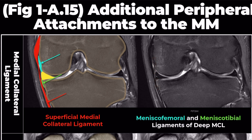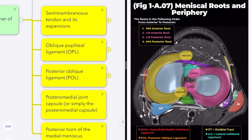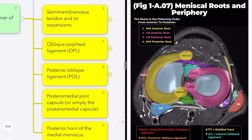The posterior third encompasses the posteromedial corner of the knee, lying between the posterior margin of the superficial medial collateral ligament and the medial border of the posterior cruciate ligament.